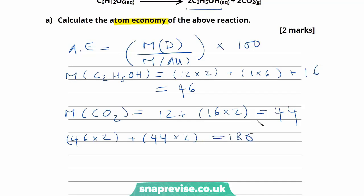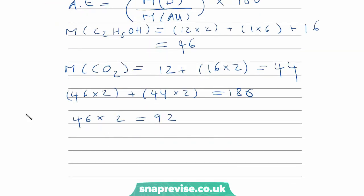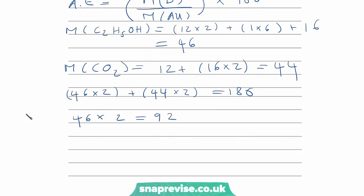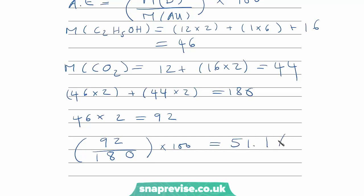We know the molar mass of all products is 180. We're forming 2 moles of ethanol, so that's 46 multiplied by 2, giving us 92 for the desired product. Substituting back in: 92 divided by 180, multiplied by 100, gives us 51.1%.